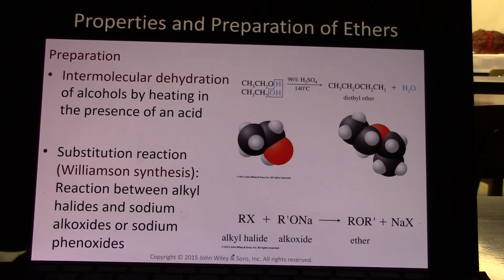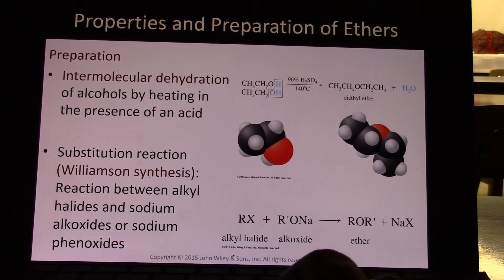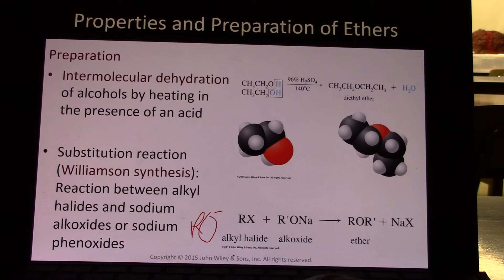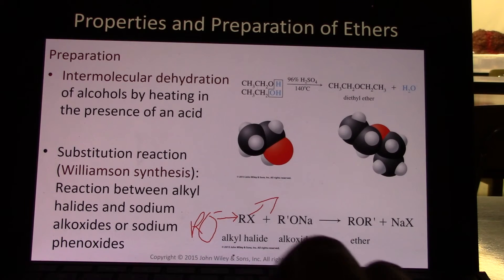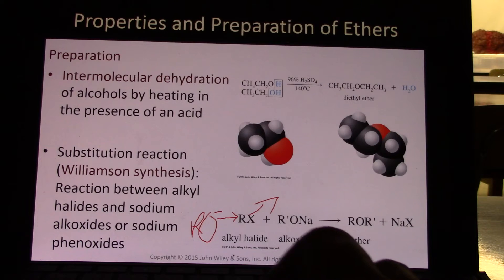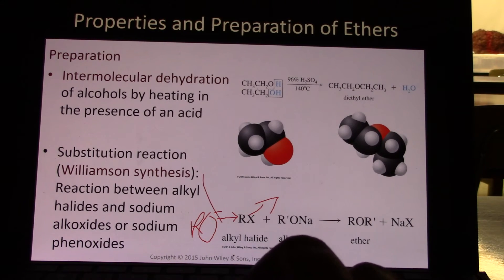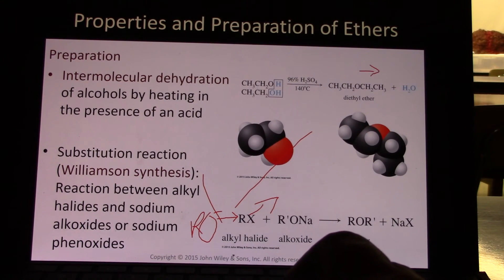The preparation of ethers. Intermolecular dehydration of an alcohol forms an ether and water. There is also the substitution reaction: if we have an alkoxide — a negative charge on the alcohol — that can kick off a halide and form an ether via an SN2 mechanism, kicking off your halide such as chloride, bromide, or iodide to form your ether and a sodium halide. This is called Williamson synthesis and is often used to prepare mixed ethers. When you dehydrate an alcohol you typically get the same group on each side, giving you symmetrical ethers. If you want asymmetrical ethers, you use Williamson synthesis.